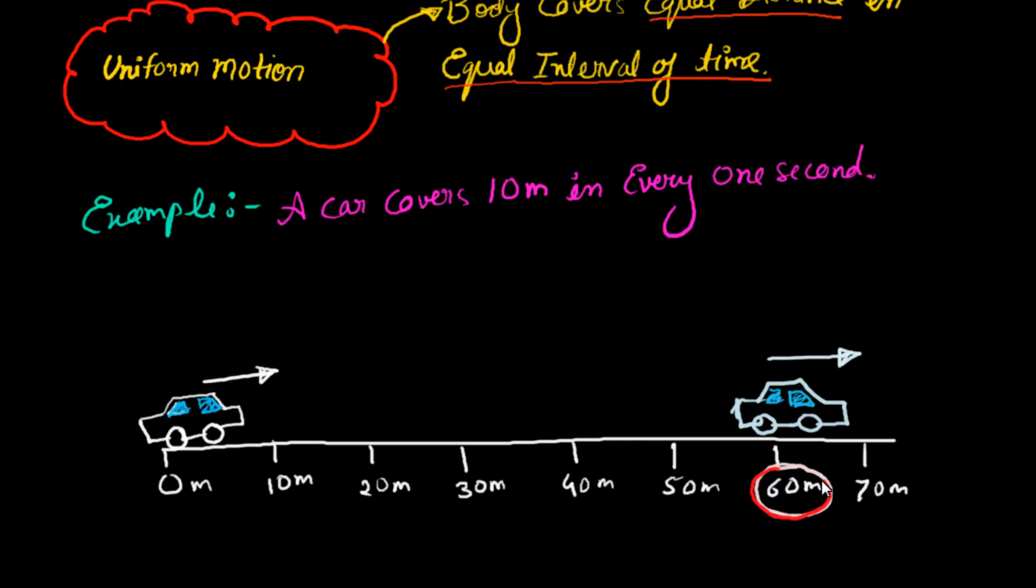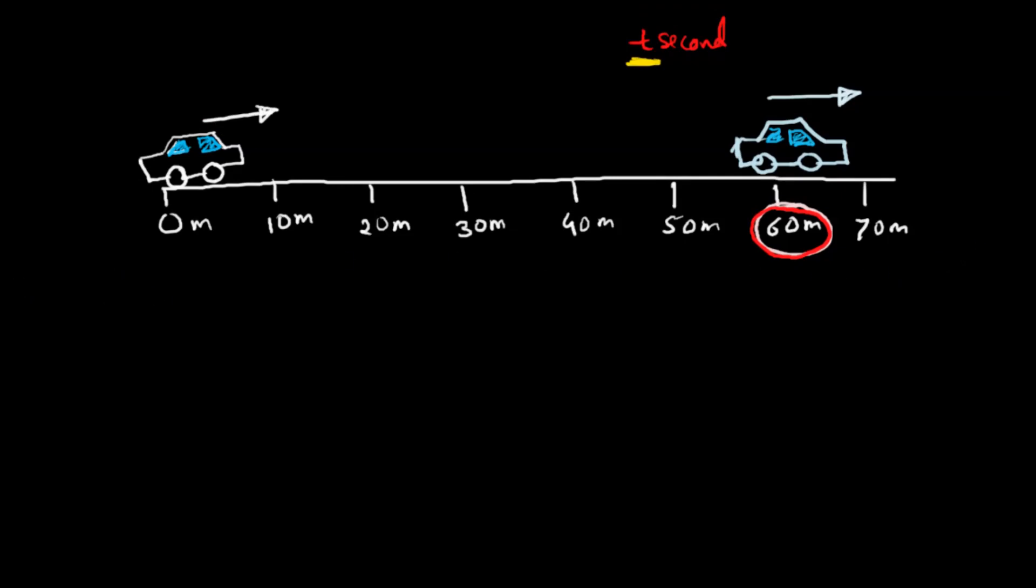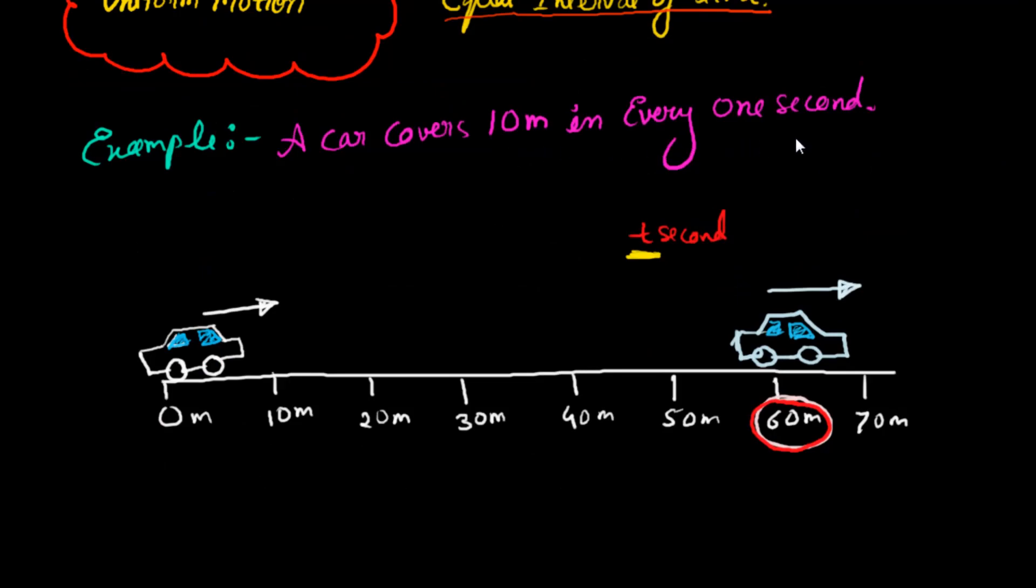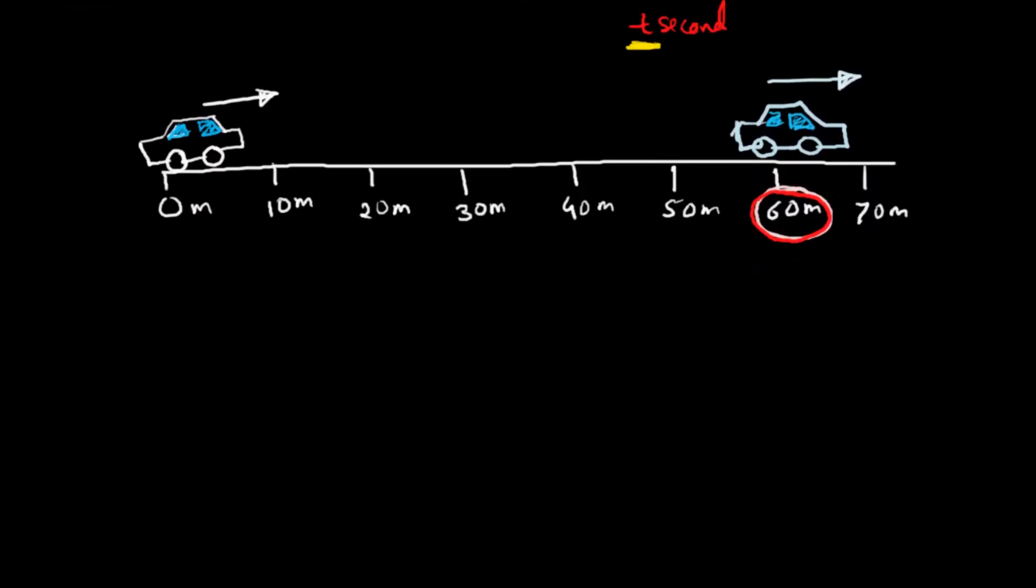What will be the T? Can you help me to find out T? Let's examine this problem very carefully. In our question, the car covers 10 meter in every one second. The distance covered is 60 meter. Let's plot a graph. On the basis of the graph, we can easily find out what will be the T.